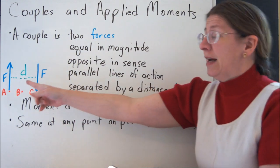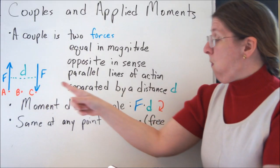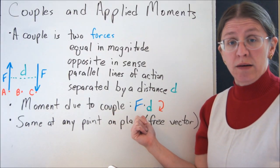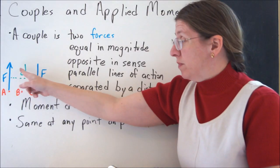In general, what you've got is one going up and one coming down. That's some line of action separated by D. The moment due to this couple is just going to be force times distance again. This force, the magnitude of one of them, not both of them, one of them times the distance.